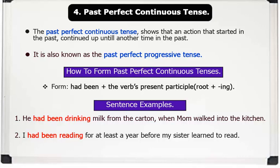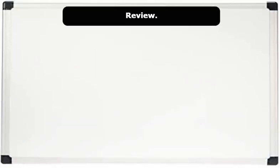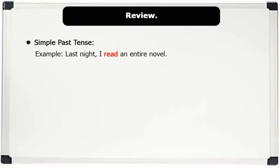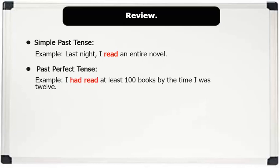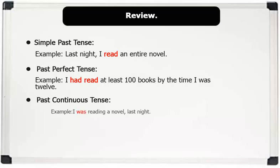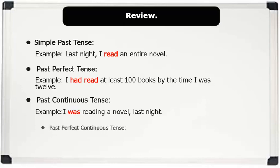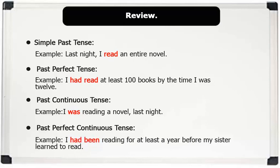Review. 1. Simple past tense — Example: Last night, I read an entire novel. 2. Past perfect tense — Example: I had read at least 100 books by the time I was 12. 3. Past continuous tense — Example: I was reading a novel last night. 4. Past perfect continuous tense — Example: I had been reading for at least a year before my sister learned to read.